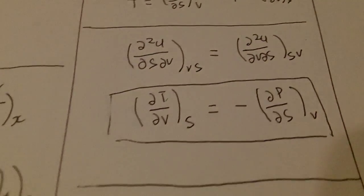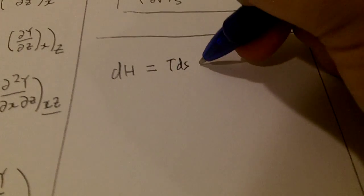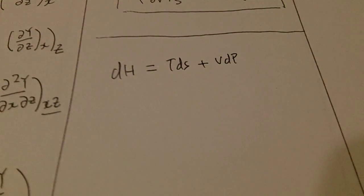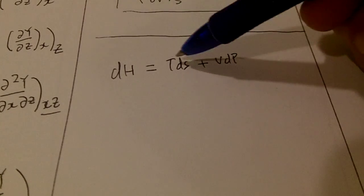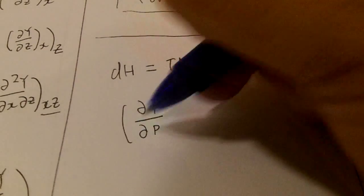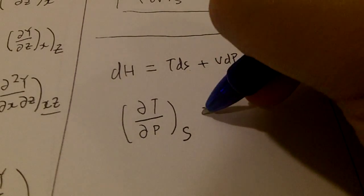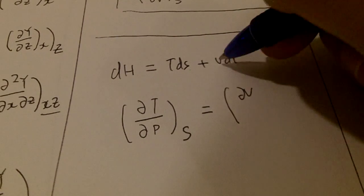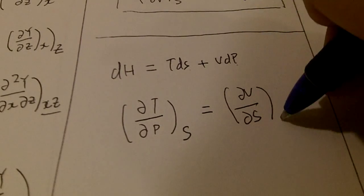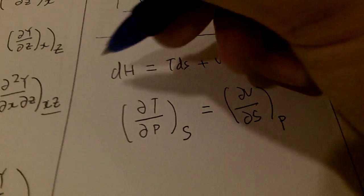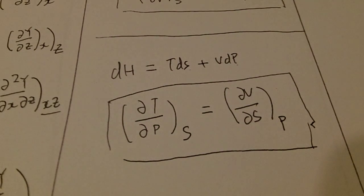Now we want to do the same thing with H. I'm just going to make it a little faster. dH equals to TdS plus VdP. So you can see T, which we just repeat the same steps as we did earlier. Here, del T del P, keeping S constant, equals to del V del S holding P constant. This is our second thermodynamic Maxwell relation.